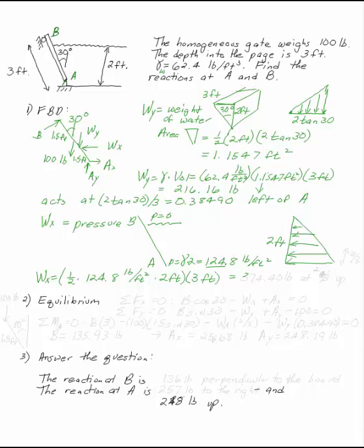This acts at 2 thirds of the way up. 2 times 2 thirds is 4 thirds. 2 thirds, excuse me, 2 thirds up north of A. So this is 1 third of 2 feet, which is 2 thirds.